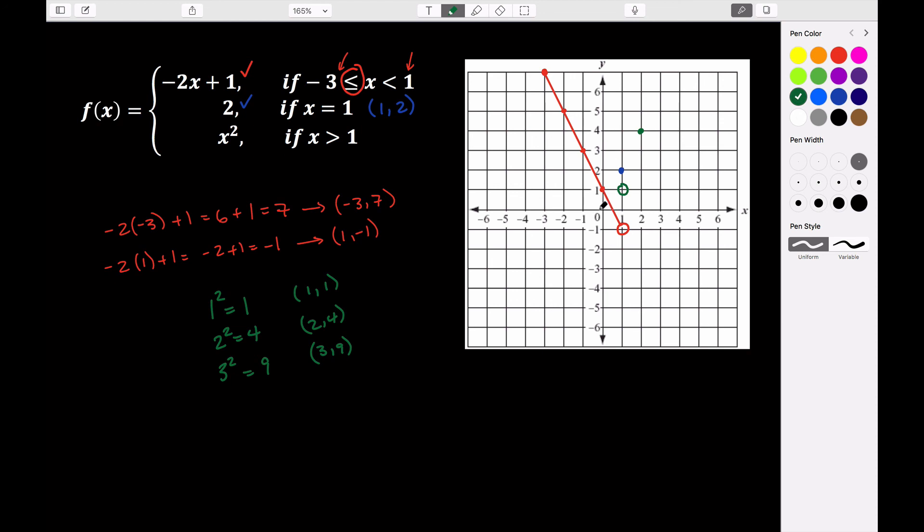So it's not going to go through there, but it would have this U kind of shape. So it's going to look something like this. And so that's going to be our piecewise defined function and its graph.